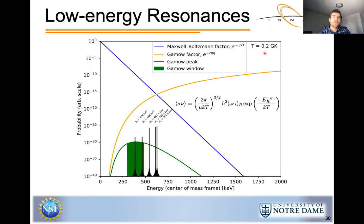This slide shows the product of the Maxwell-Boltzmann factor and the Gamow factor — the Gamow peak — which represents the probability of tunneling through the Coulomb barrier. Thermonuclear reactions mainly occur within this Gamow window. At 0.3 gigakelvin, the upper s-process temperature, five relevant resonances fall in the Gamow window. As the temperature decreases to 0.2 gigakelvin, the 470 and 566 keV resonances become very important, with the 470 keV resonance dominating that temperature range.